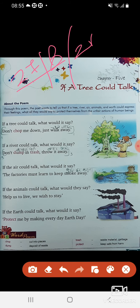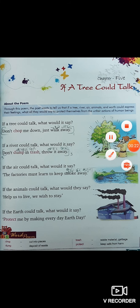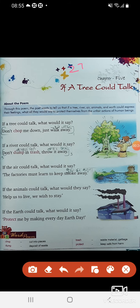Okay, so this is the date, 27 August 2021. So we are reading chapter number 5, If a Tree Could Talk. What does this mean? If a tree could talk, meaning that a tree can talk. If a tree can talk, what would happen?